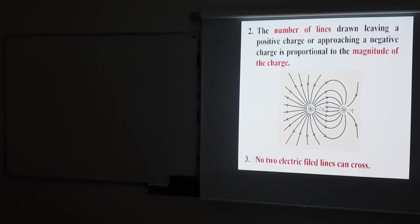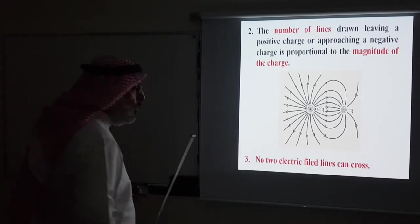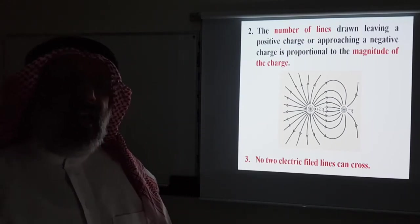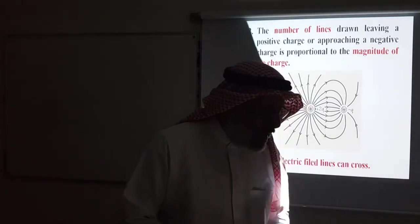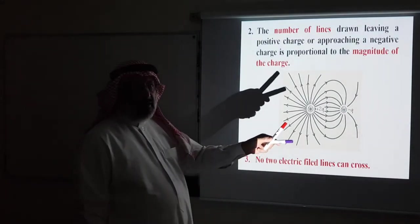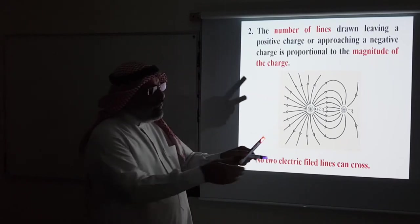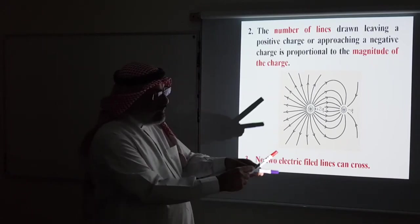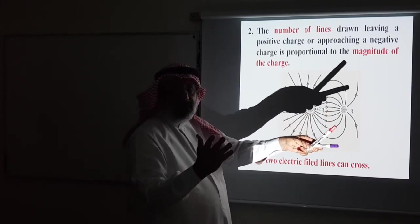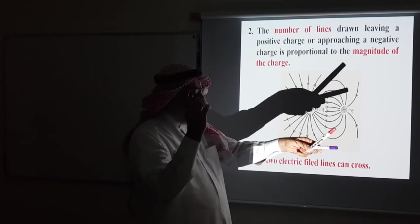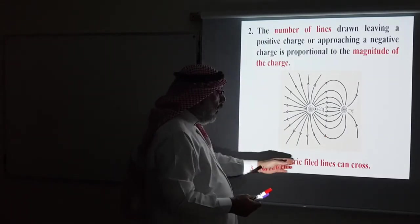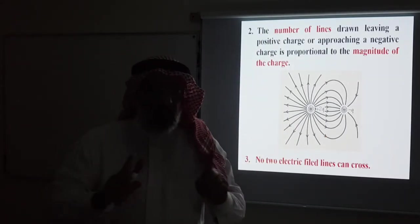Rule three: no two electric field lines can cross each other. Because the electric field is tangent to the field lines, if two lines intersected, the electric field at that intersection point would have two directions simultaneously — which is impossible. A vector at one point in space at the same instant cannot have two directions. Therefore, electric field lines either run parallel to each other or diverge; they can never cross.